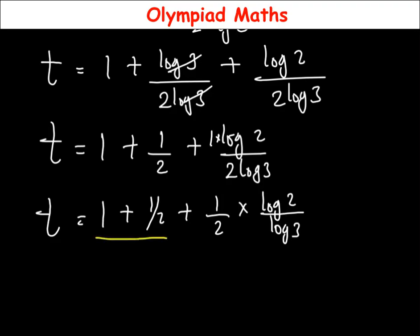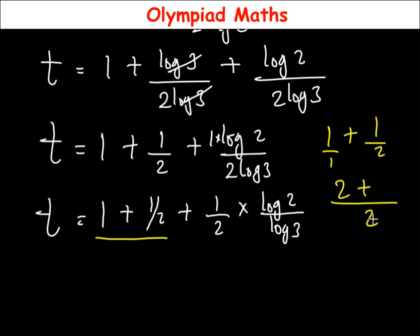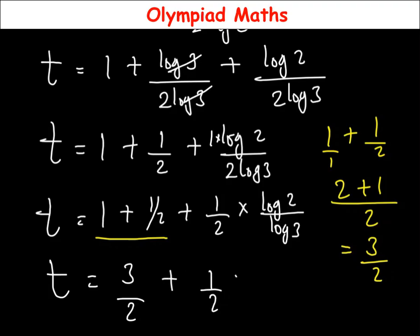Let's first simplify 1 plus 1 over 2. Writing 1 as over 1, we look for the LCM of 1 and 2, which is 2. So 2 divided by 1 gives 2; 2 times 1 is 2 plus 1 is 3, giving us 3 over 2. So 1 plus 1 over 2 equals 3 over 2. Therefore t is equal to 3 over 2, then plus one half times log 2 over log 3.